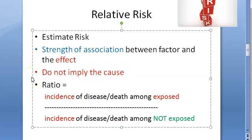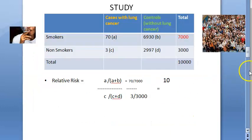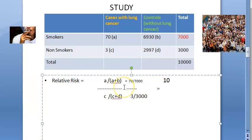So we are done with relative risk. We are just saying this could possibly be a risk; what exactly causes it, we don't know. To summarize, the formula is a divided by (a + b), divided by c divided by (c + d). That's all for relative risk.